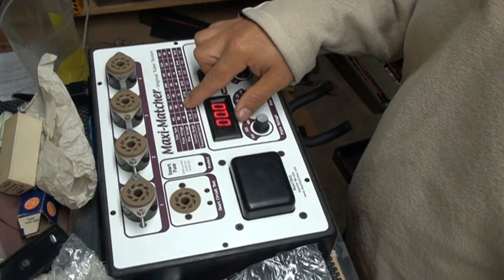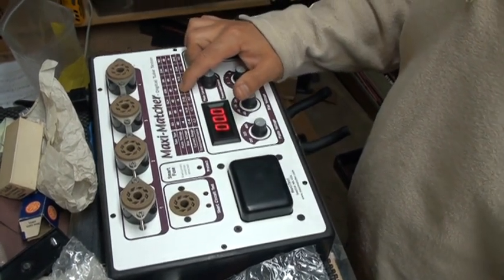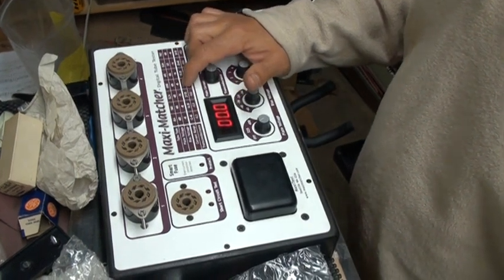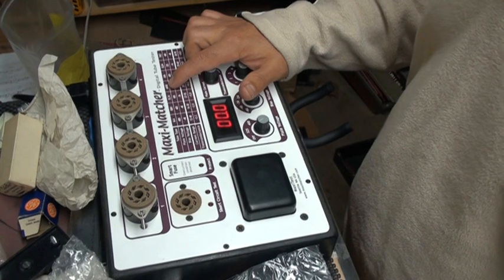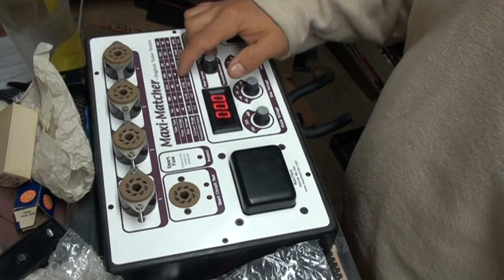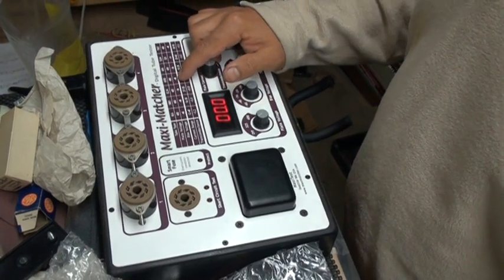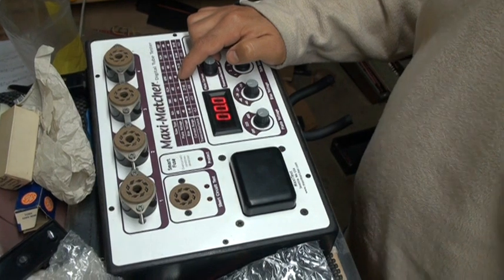Then you also have 6L6s here which is minus 48, 5881s minus 48, 6550s minus 48. I think the KT88s are a direct link to the 6550s, but the numbers for KT88s are not here, though I believe them to be minus 48.